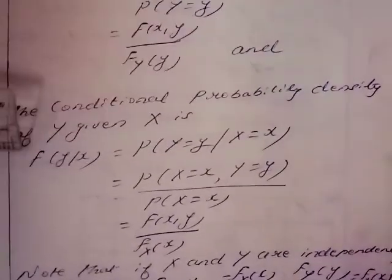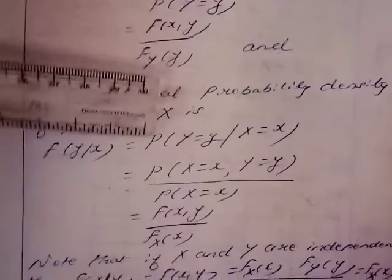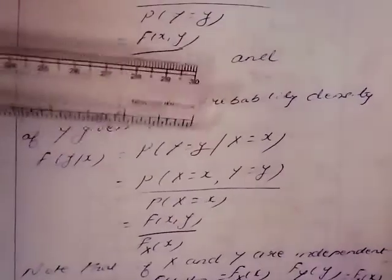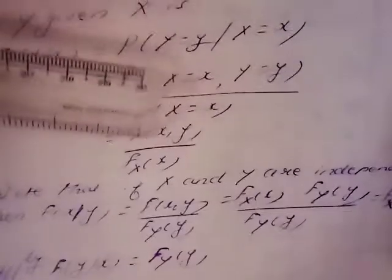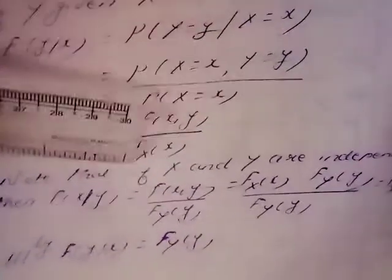The conditional probability density of capital Y given capital X is f(y|x) = P(Y = y | X = x) = P(X = x, Y = y) / P(X = x). The numerator is f(x,y) and the denominator is f_X(x), giving f(x,y) / f_X(x).